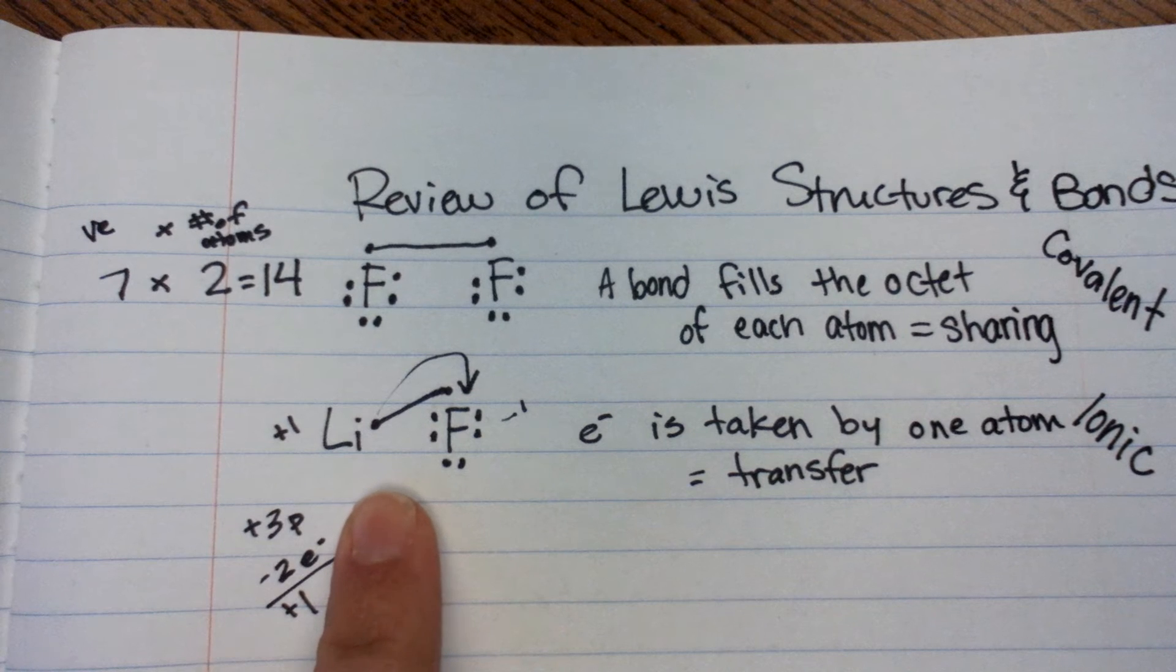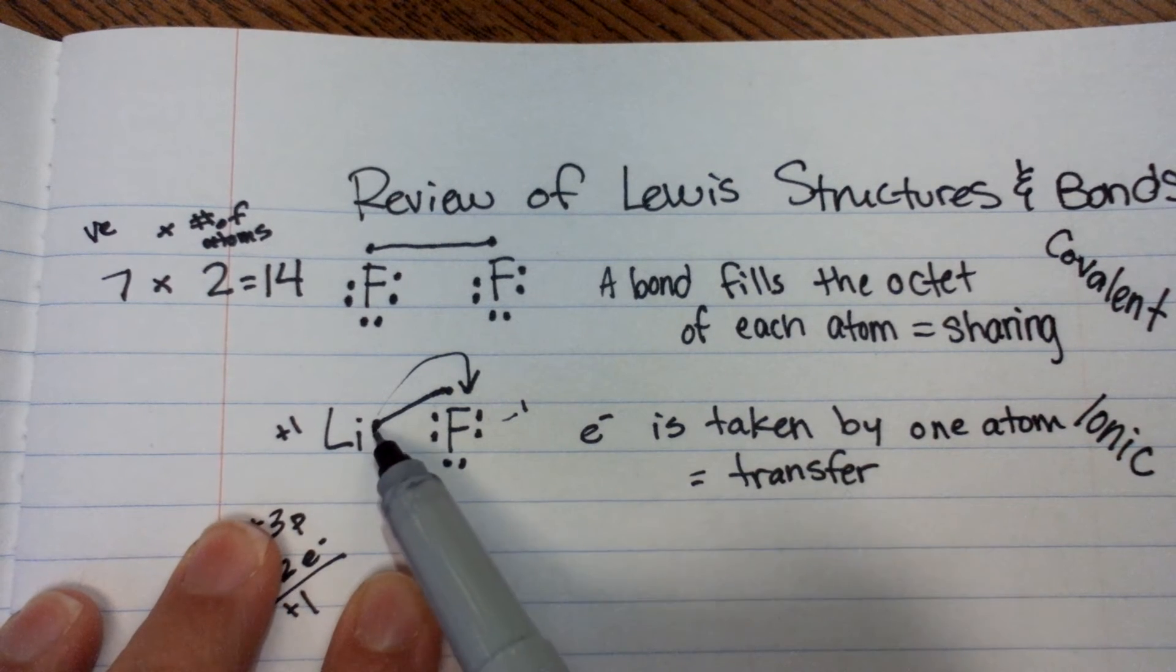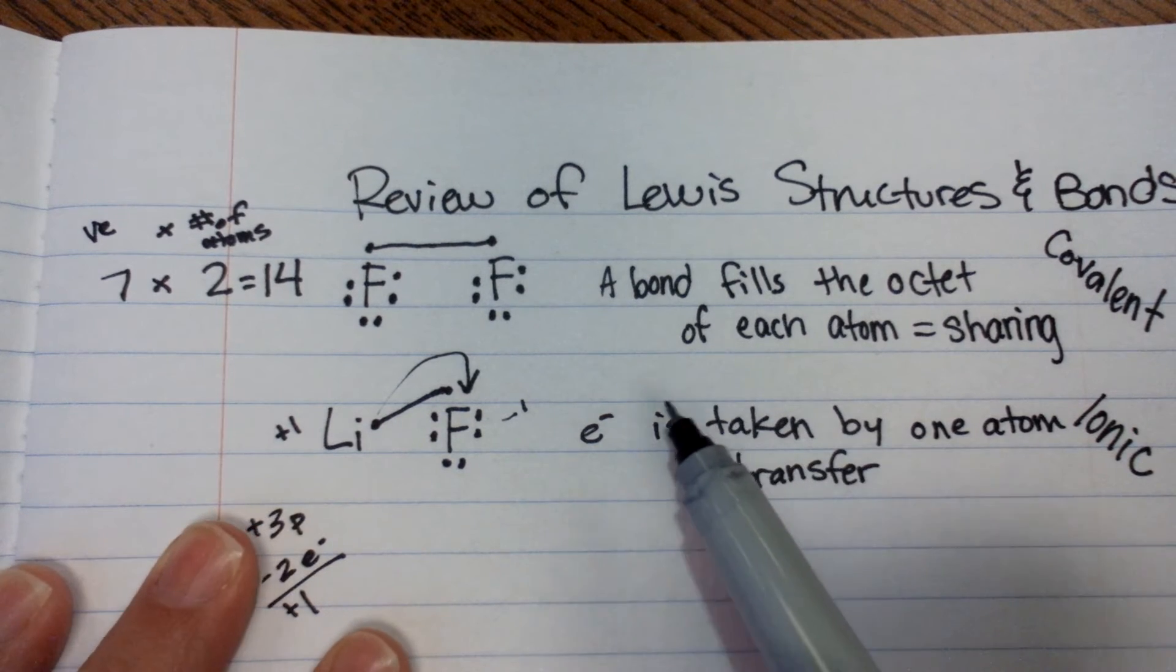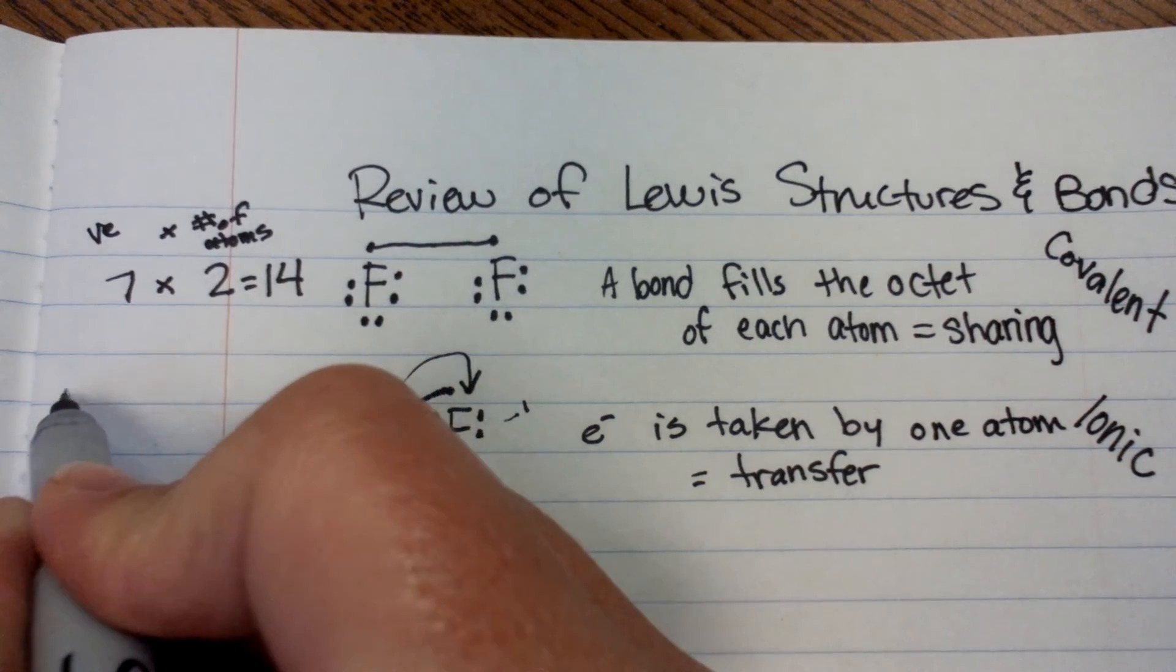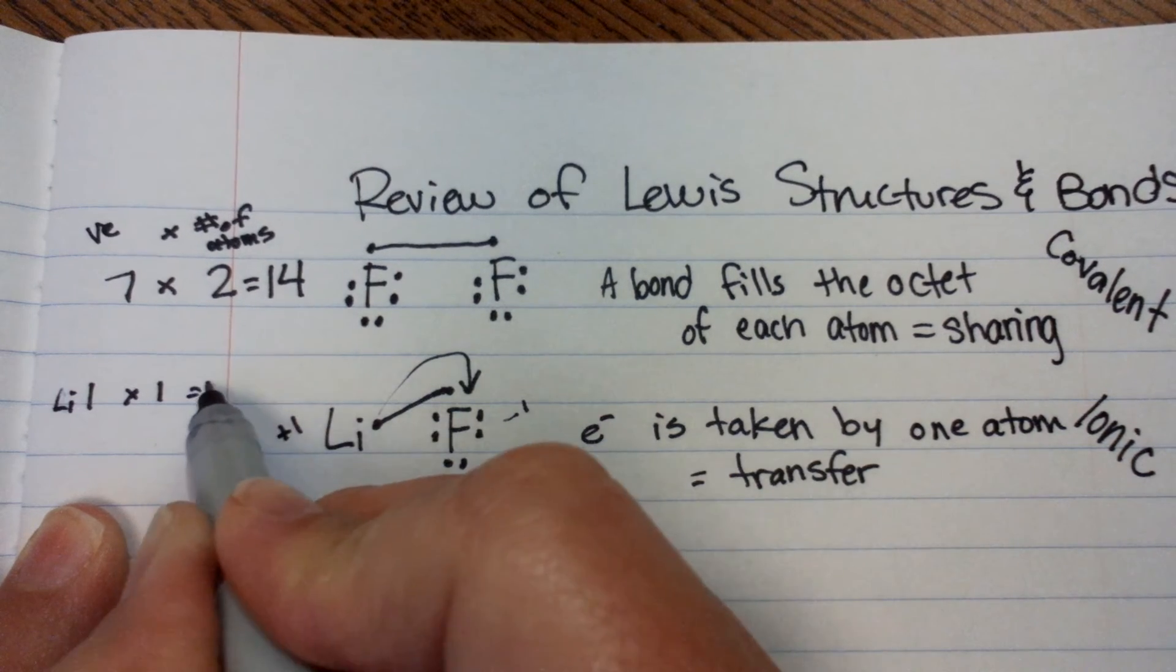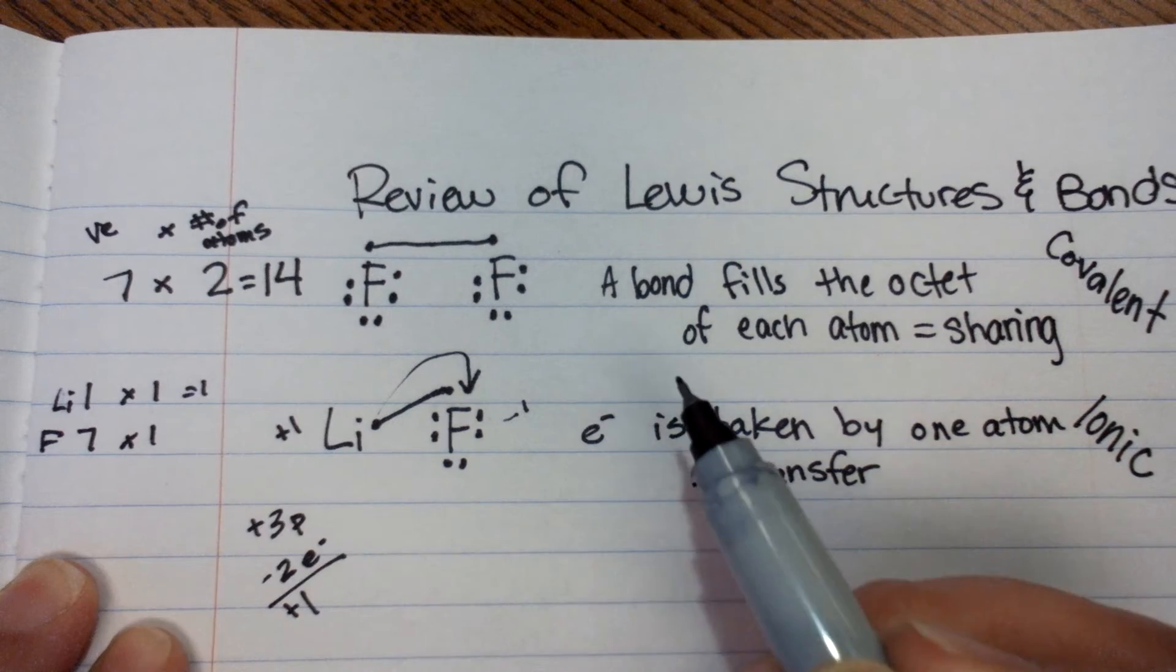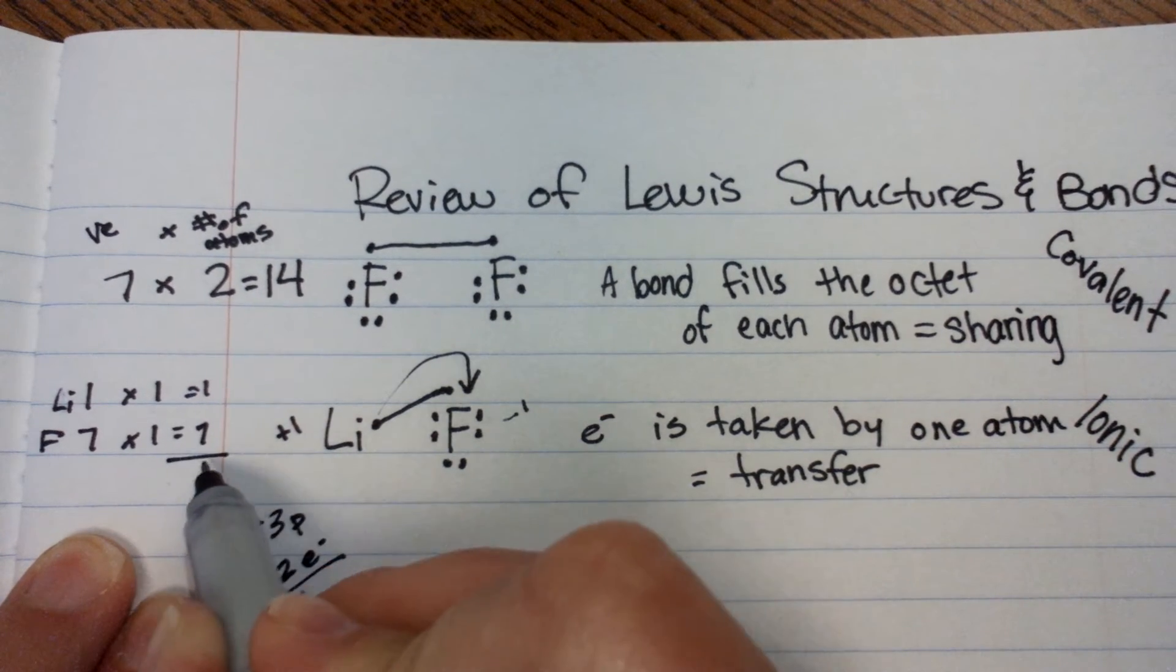What about for this lithium-fluorine business? How many total valence electrons are there? There's 8. So, we could look at it by counting: 1, 2, 3, 4, 5, 6, 7, 8. That's super easy. Or, we could look at it as lithium has 1, and there's only 1 atom of lithium, so that's 1. Fluorine has 7, and there's 1 atom of fluorine, so that equals 7. And then we have 8.